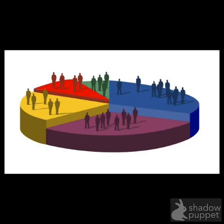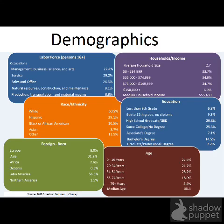The topic today is demography and migration. The question we're going to be asking is: what are the factors that influence where people settle? Demography is basically the study of populations. As you can see in this graphic, all demographers do is break down population into different categories — whether it's ethnicity, education, age, or income — to better understand it.